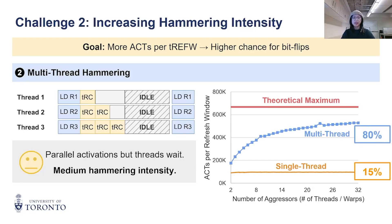As we see in this graph, increasing the number of threads significantly improves the hammering intensity to 80% of the theoretical maximum. But there's a caveat: threads within a warp execute in lockstep, which means that even if thread 1 receives its data early, it cannot proceed to the next request until the slowest thread in the warp finishes.